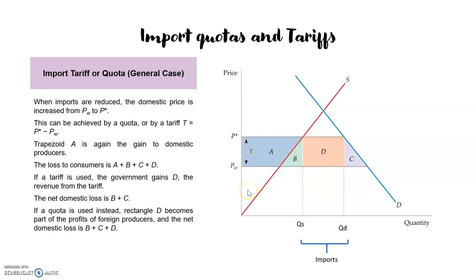So at the end we also have revenue for the government, and the revenue for the government will be equal to the quantity imported multiplied by the tax, which is P star minus Pw. So exactly what the government is going to earn is represented by area D. So at the end, the only areas that are lost completely for the society are areas B and C, because neither the consumer, nor the producer, nor the government are going to earn B or C. So these are the deadweight losses — the decrease in welfare for the society — B and C.